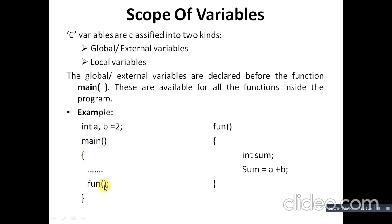For example, 'int a, b = 2' declares two global variables a and b where b has the value 2. Inside main we call a function fun(). In that function, 'int sum = a + b' — the value of b is already set, a is provided from main, and the sum is displayed. Here sum is a local variable restricted to the fun() function and cannot be used outside it. Variables a and b are global variables accessed across functions — this is how global and local variable scope works in C.